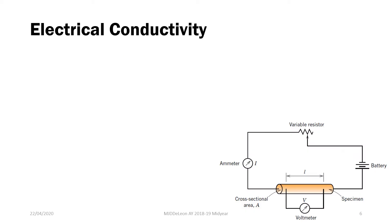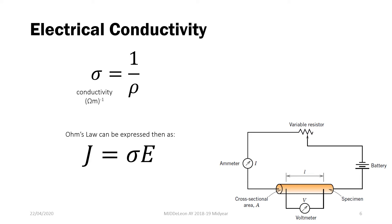For electrical conductivity, it is represented by sigma, which is equal to 1 over your resistivity. So conductivity has the units Ohm-meter raised to the negative 1. From this representation, we can express our Ohm's law as J is equal to sigma E, where J is your current density — that is your current over the cross-sectional area — and E is the electrical field, or voltage over the length of your specimen.